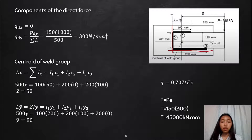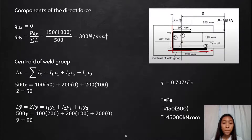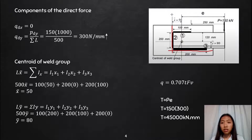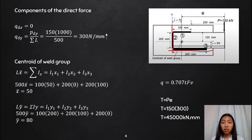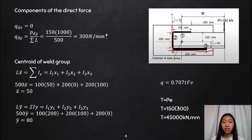We need to compute for the torsional force, but we need to compute first the torsional moment, which is T = P × e. Yung e natin is the eccentric distance ng ating force na 150 kN. Since meron na tayong 250 mm, and ang ating x̄ = 50, and meron tayong length ng weld na 100 mm. So if this is 50, merong matitirang 50 dito, and our eccentric distance will be 250 + 50 = 300 mm. For the torsional moment: T = 150 × 300 = 45,000 kN·mm.